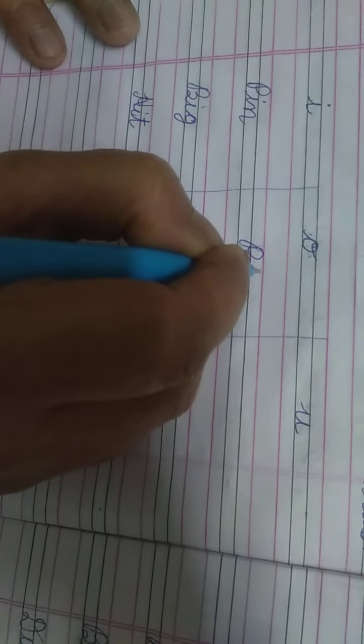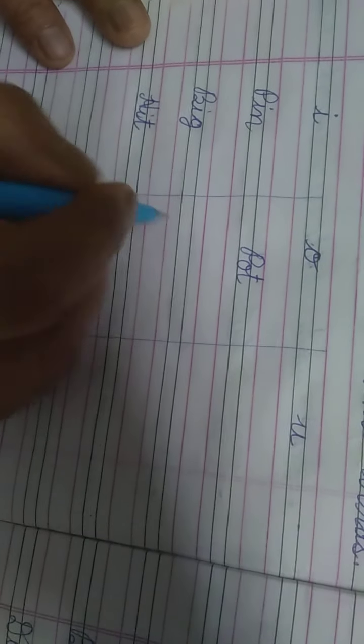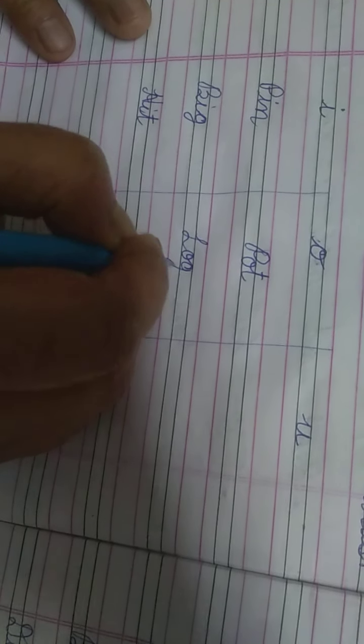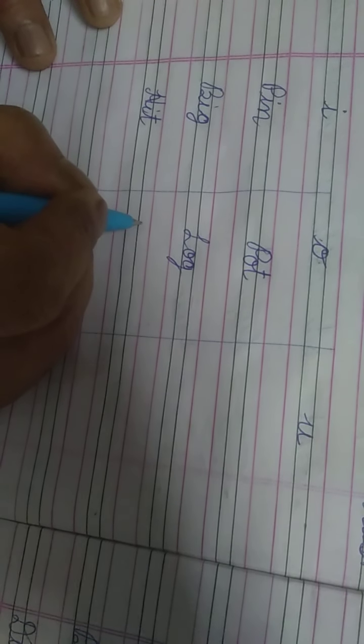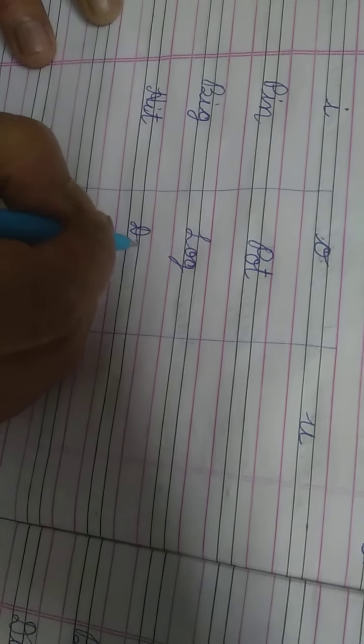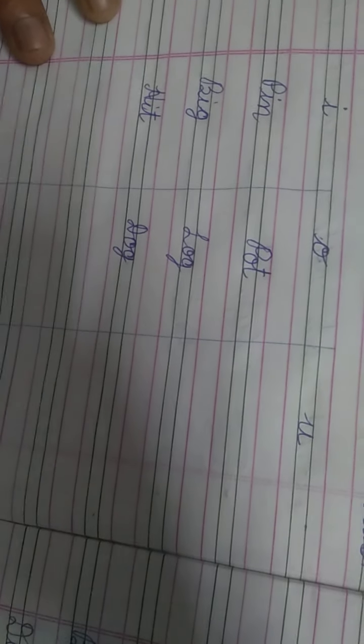O sound word? P-O-T. Pot. L-O-G. Log. और क्या है? D-O-G. Dog. Okay?